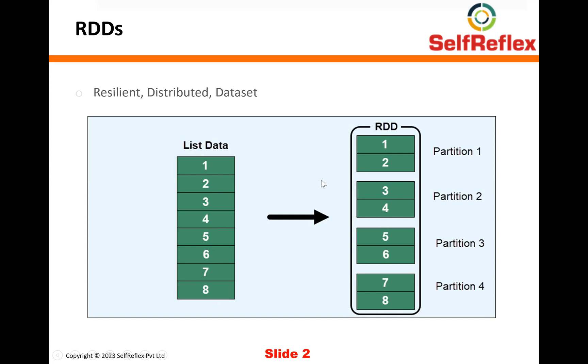So number of partitions can be controlled by you, but let's not get into those details as of now. We will discuss those details in future videos. For the moment, let's say Spark creates four partitions out of it. The first partition contains first two rows, second partition contains next two, third partition contains next two, and the last partition contains the last two rows.